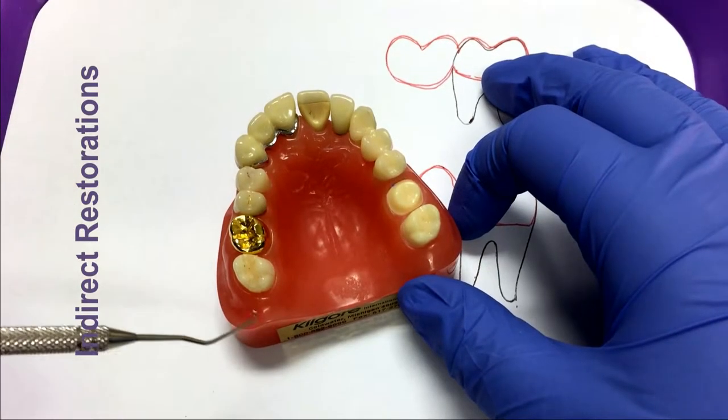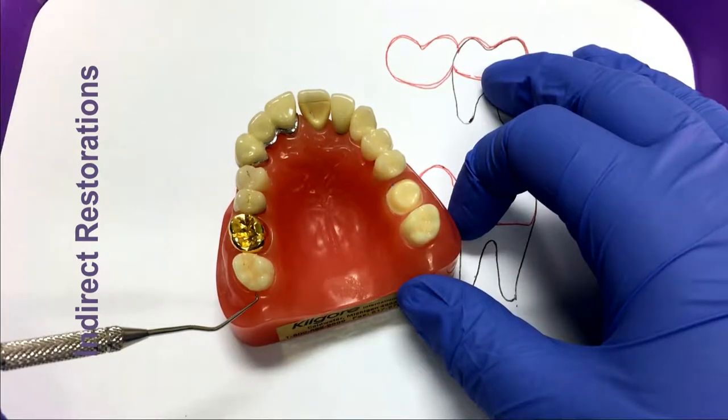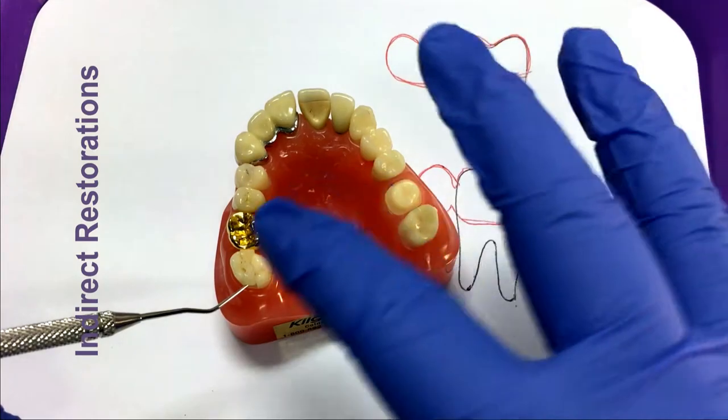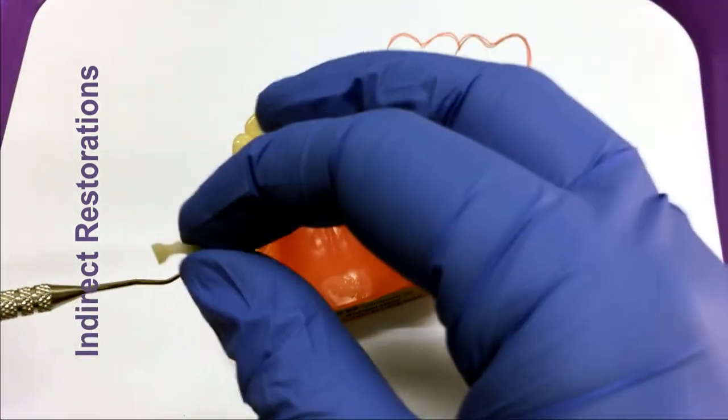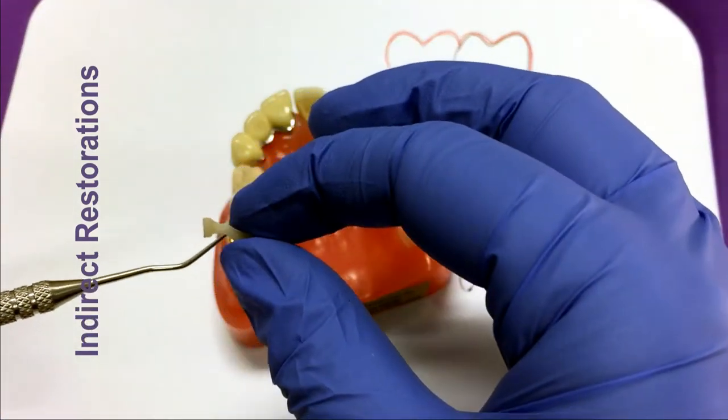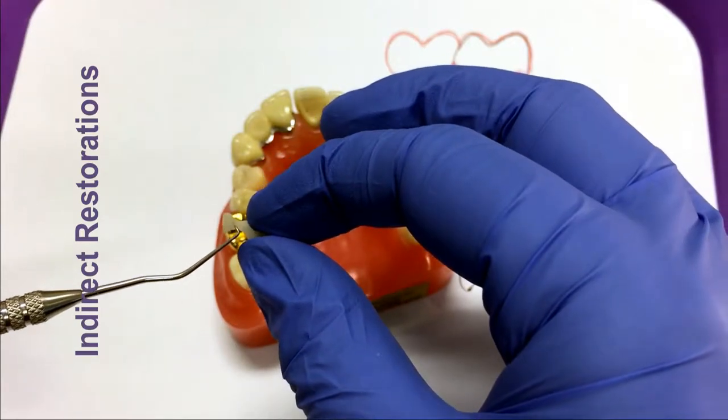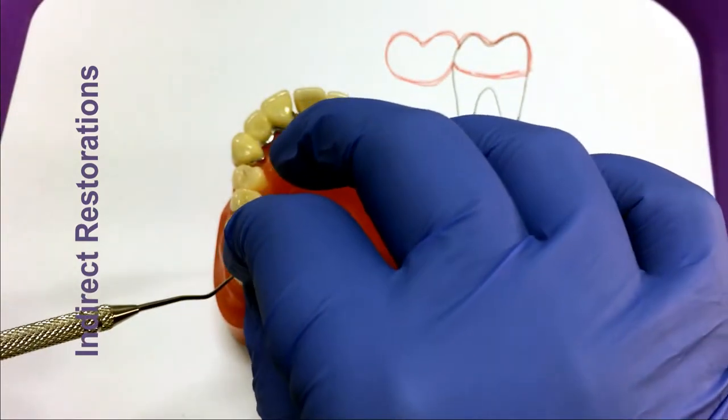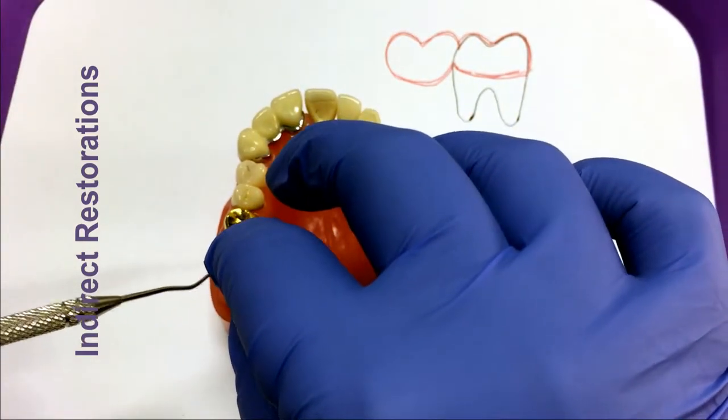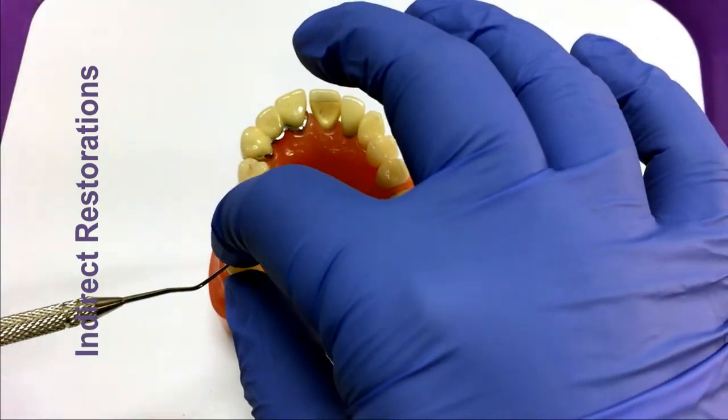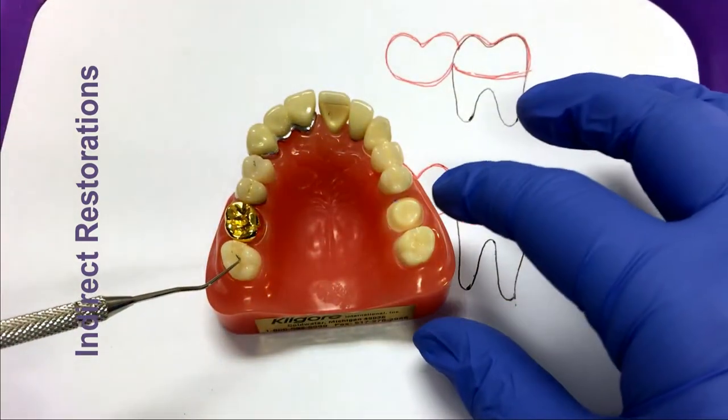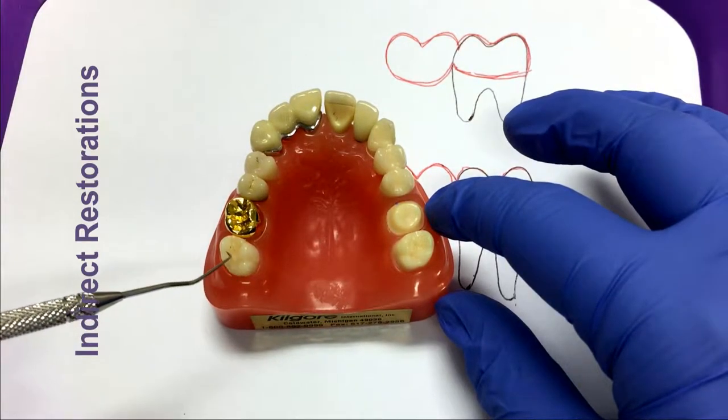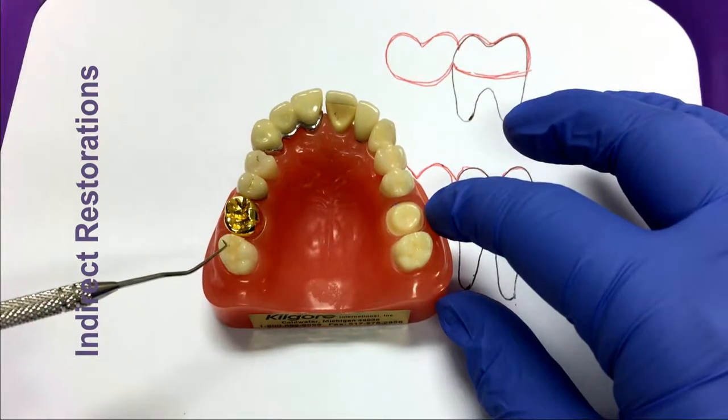We'll start off with an inlay. Inlays fit into the grooves and fissures of the teeth. They're quite small. They're commonly made out of porcelain or ceramic but sometimes they'll also be made out of precious metals like gold, platinum, and palladium. They fit into the fissures of the teeth so they'll follow the grooves and fissures of the tooth. They do not go on to the tips or the cusps.